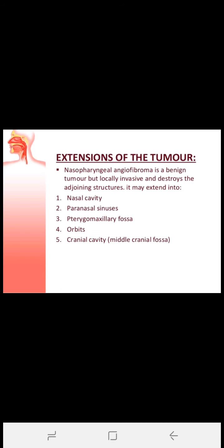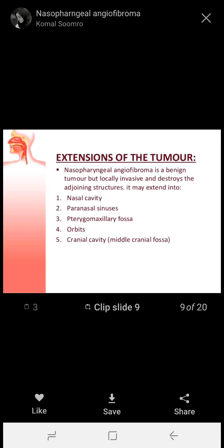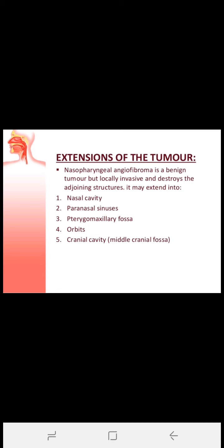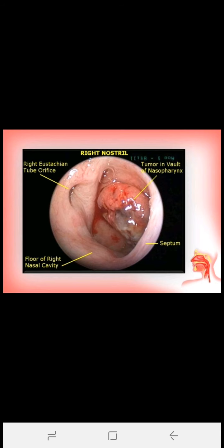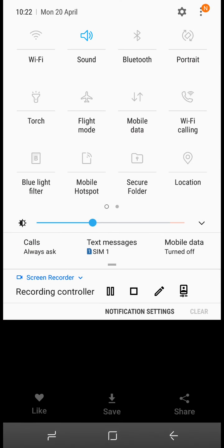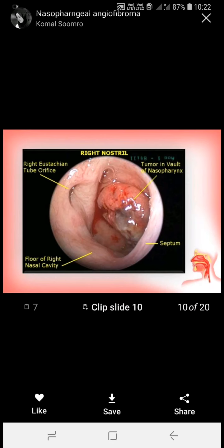Regarding extension of the tumor: nasopharyngeal angiofibroma is benign but locally invasive and destroys adjoining structures. It may extend into the nasal cavity, paranasal sinuses, pterygomaxillary fossa, orbits, and cranial cavity — that is, the medial cranial fossa. In the picture you can see the tumor within the right side of the nasopharynx.